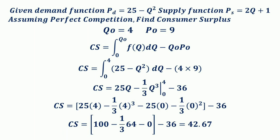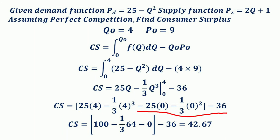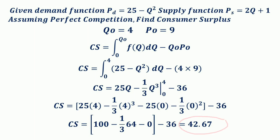Substituting Q = 4: 25(4) minus (1/3)(4³), minus substituting Q = 0: 25(0) minus (1/3)(0³), minus 36. So the consumer surplus is 100 minus (1/3)(64) minus 0 minus 36, which equals 42.67. Therefore the consumer surplus is 42.67.